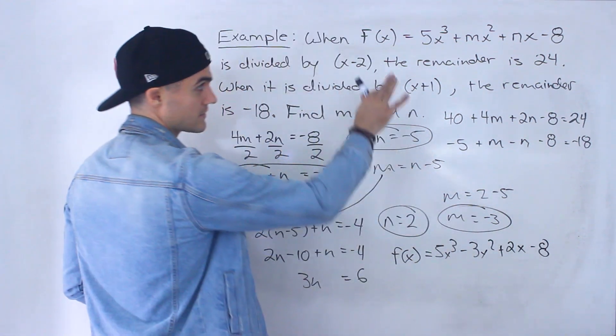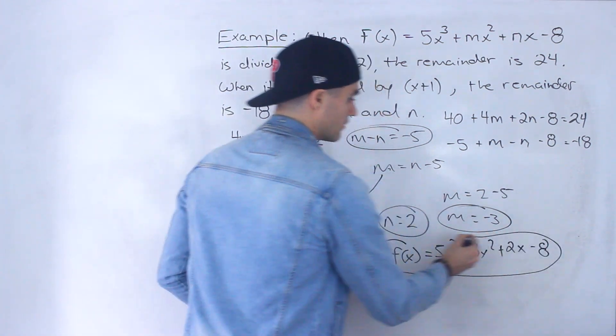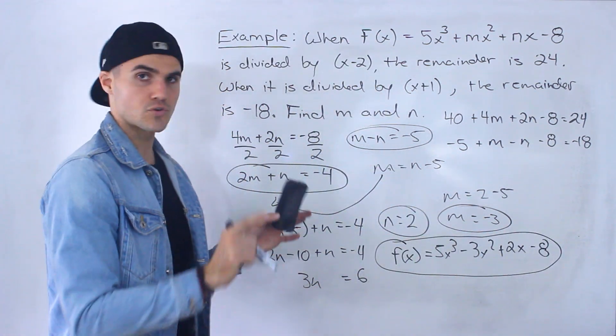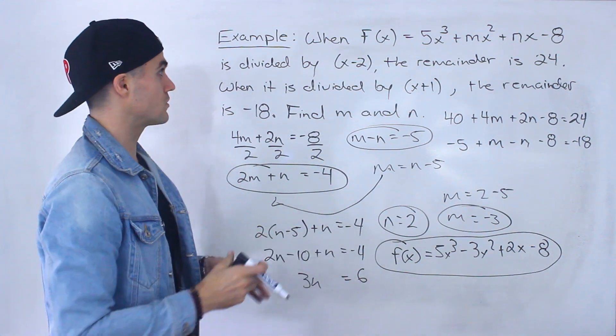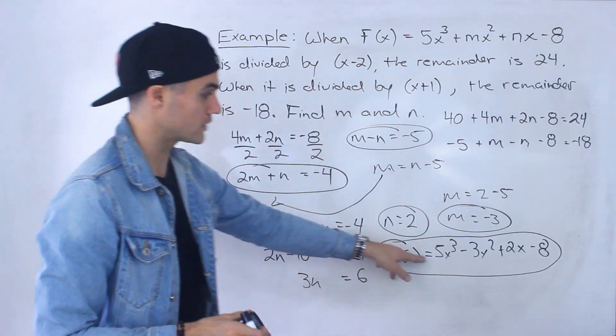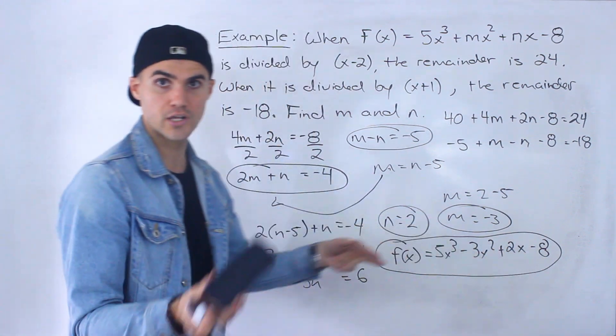So we know the function is going to be 5x³ - 3x² + 2x - 8. If I plug in this m and this n over there. So you could take this function now and you could check if those original statements hold. So we said that f(2) has to equal 24. So you plug in 2 for all the x's, you should get 24.